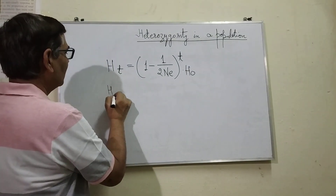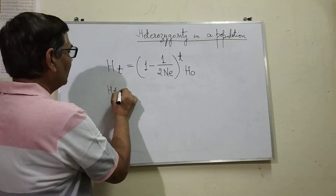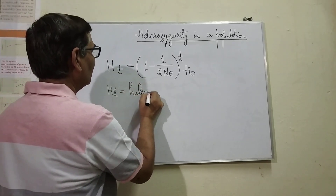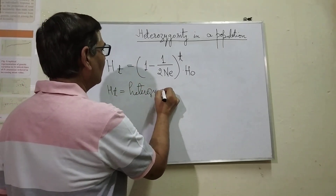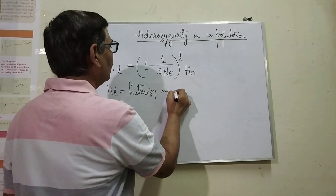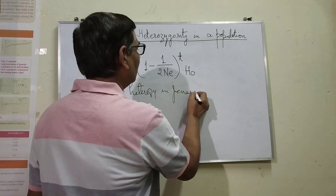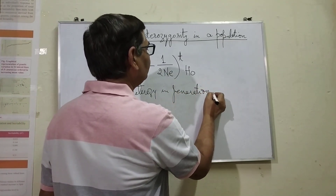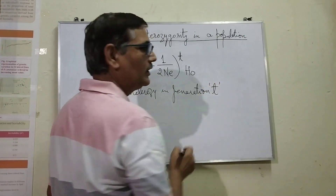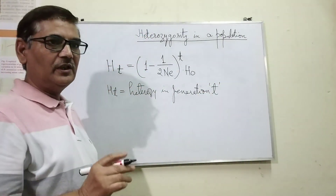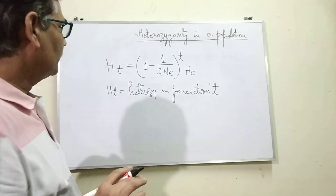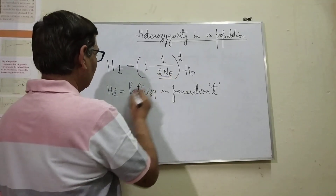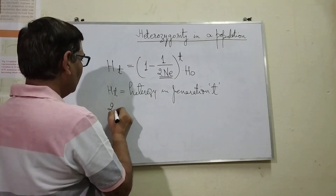Here, Ht stands for heterozygotes in generation t. t refers to the number of generations. Then, 2Ne — this 2Ne represents...